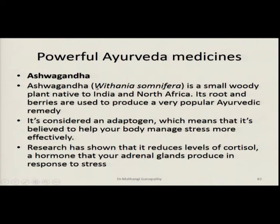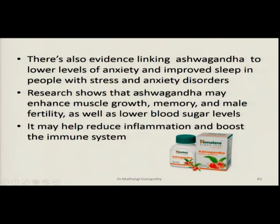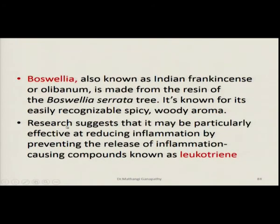Some powerful Ayurveda medicines — Ashwagandha or Withania somnifera is a small woody plant native to India and North Africa. Its roots and berries are used to produce a popular Ayurvedic remedy. As an adaptogen, it is believed to help your body manage stress more effectively, and research has shown that it reduces the levels of cortisol, a hormone that your adrenal glands produce in response to stress. There is also evidence linking Ashwagandha to lower levels of anxiety and improved sleep in people with stress and anxiety disorders. Research shows that Ashwagandha may enhance muscle growth, memory, and male fertility, as well as lower blood sugar levels. It also helps to reduce inflammation and boost the general immune system.